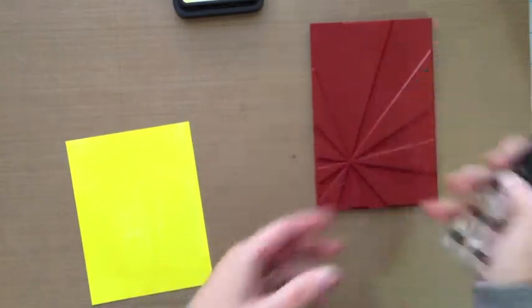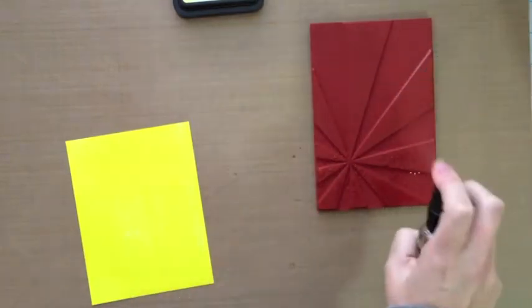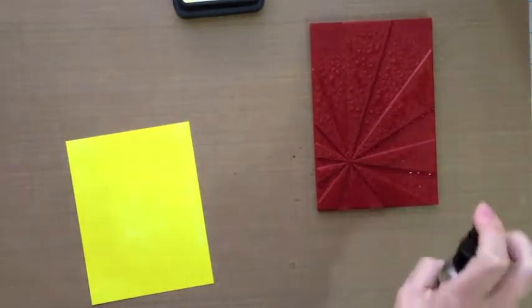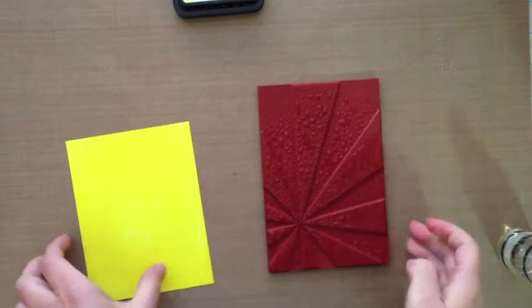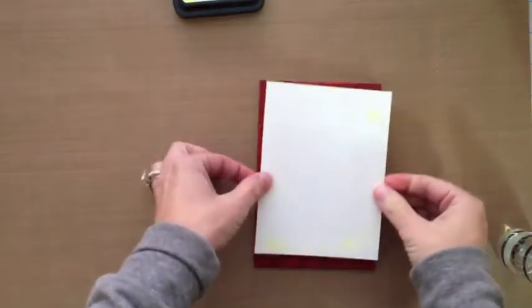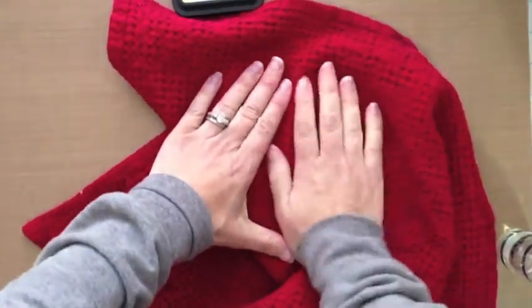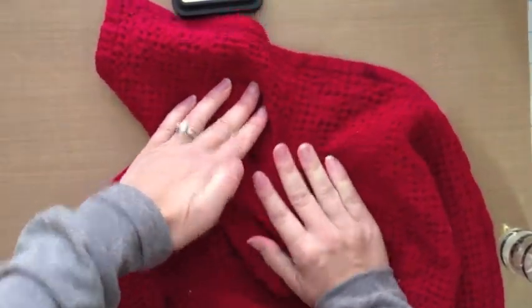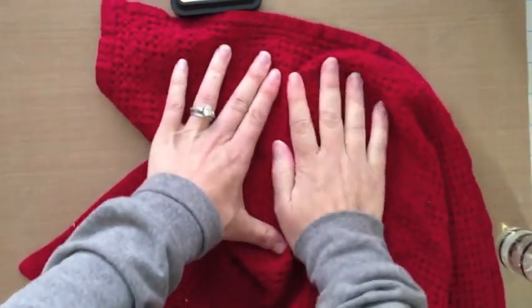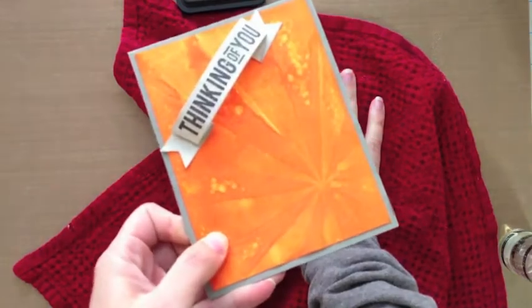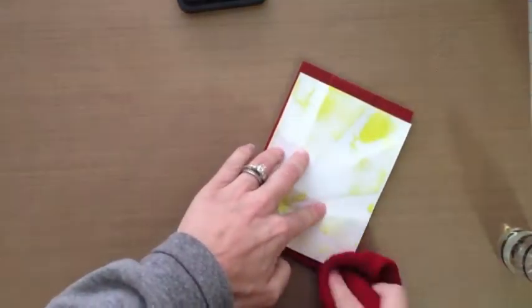I've inked up the card base with my distress ink and here is my stamp. This is just a mini mister by Ranger and I'm just going to spray it really good with my water. Then I am going to press my cardstock directly over the water. This is just a cloth, I just press down. You could probably use watercolor paper too but I use regular cardstock for this card.